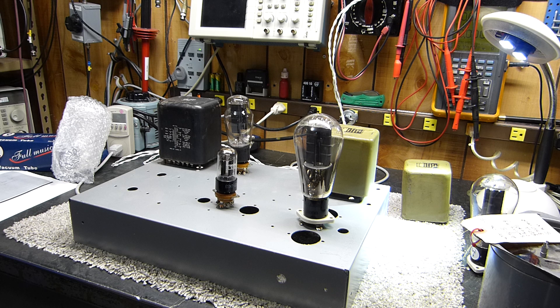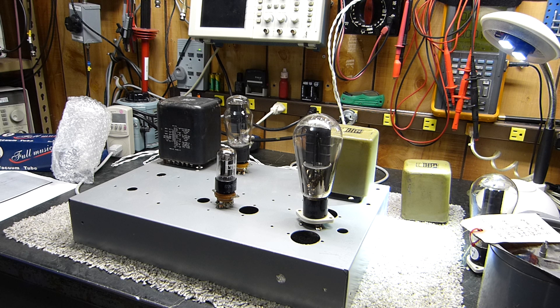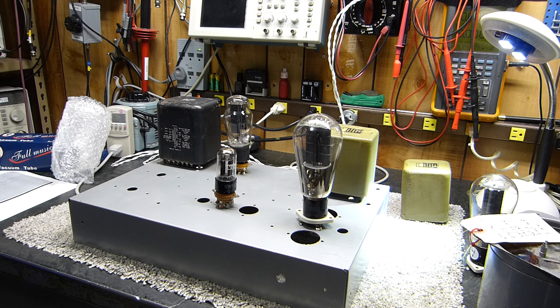It'll be all triodes: 6SN7 driver, 300B loaded into a choke. I think the choke is the most exciting part about it, because if it works really good, then it would open up a much easier way for everybody to build amplifiers. Chokes are fairly inexpensive. 15 Henry chokes might be a little harder to come by - even I think 10 would probably be enough when you think about it.